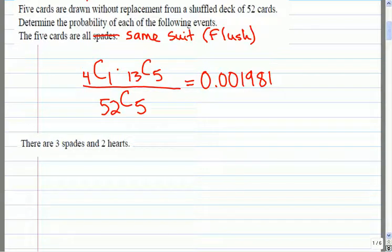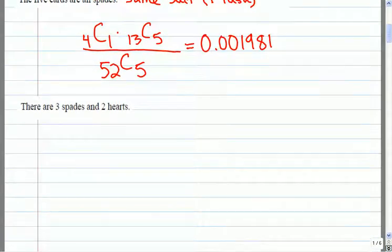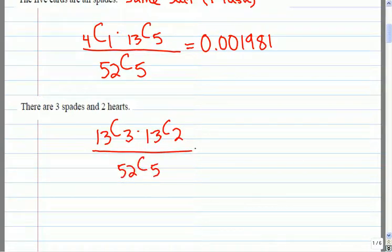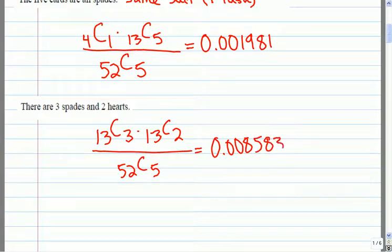The probability is not very optimistic — it comes out to about 1,981 over the total. So what if this time we wanted to find a hand that had three spades and two hearts? Do you think it's going to be more or less than the probability of having a flush? More. From the spades you're going to choose three, from the hearts you're going to choose two — that fills all five cards — divided by a 52-card deck choose five. That gives us a probability of 0.008, so it's quite a bit more likely. That's about 0.8583 percent.